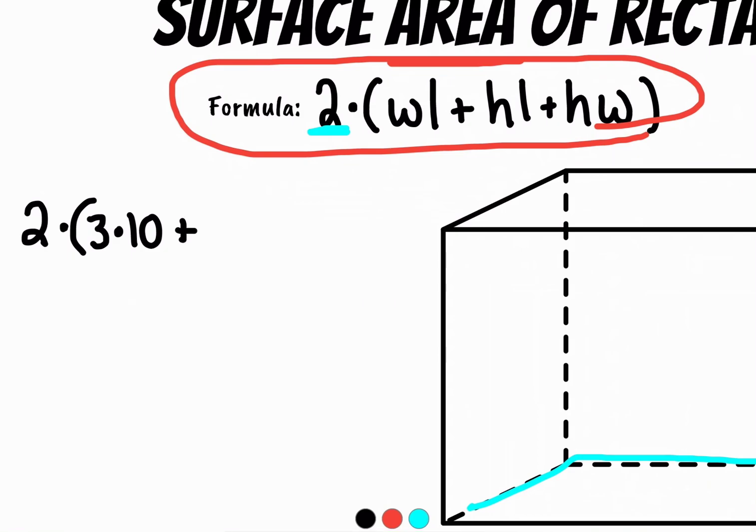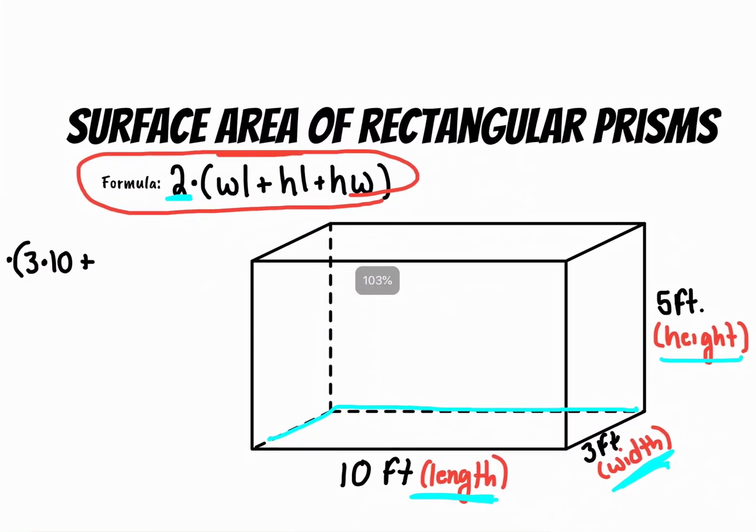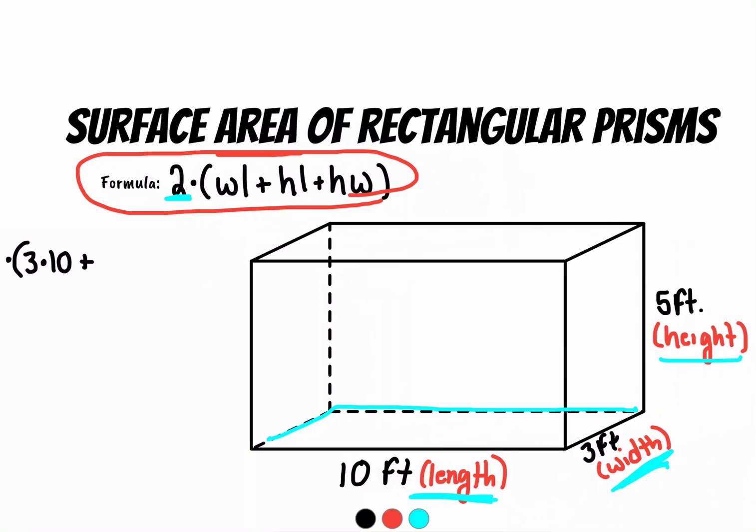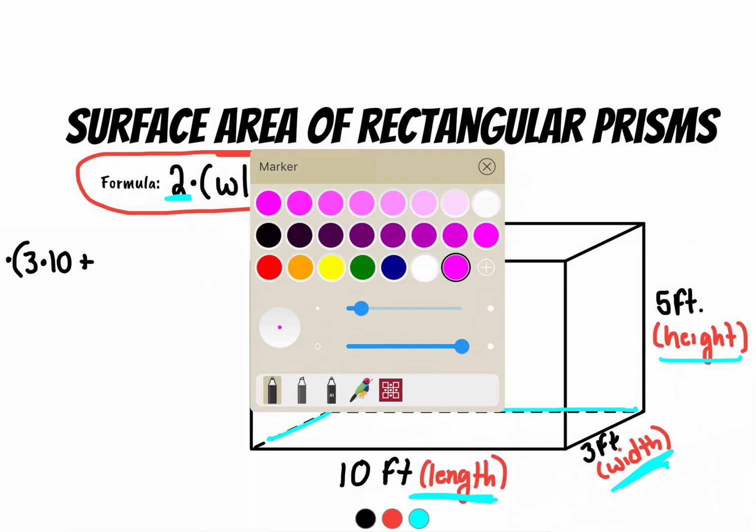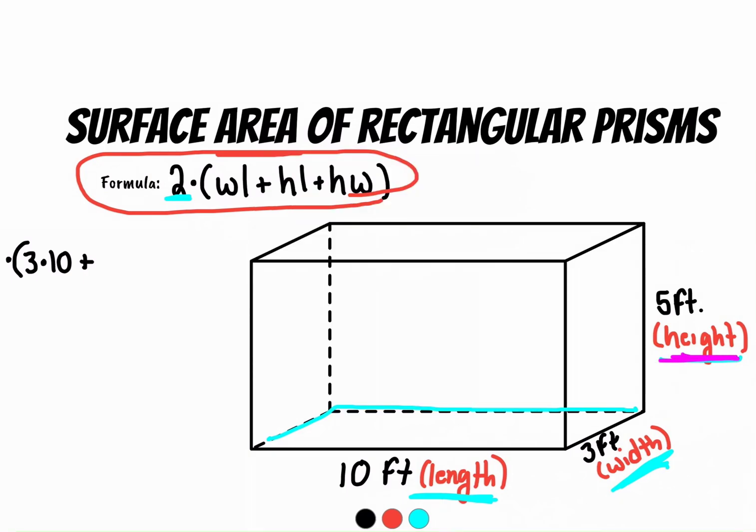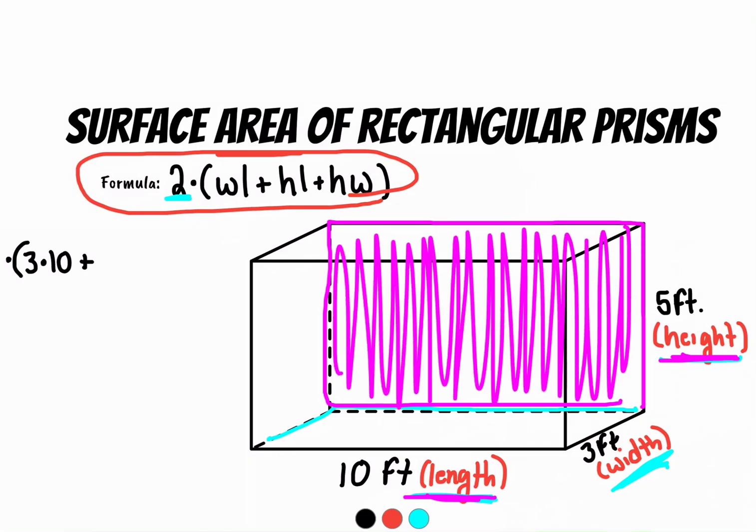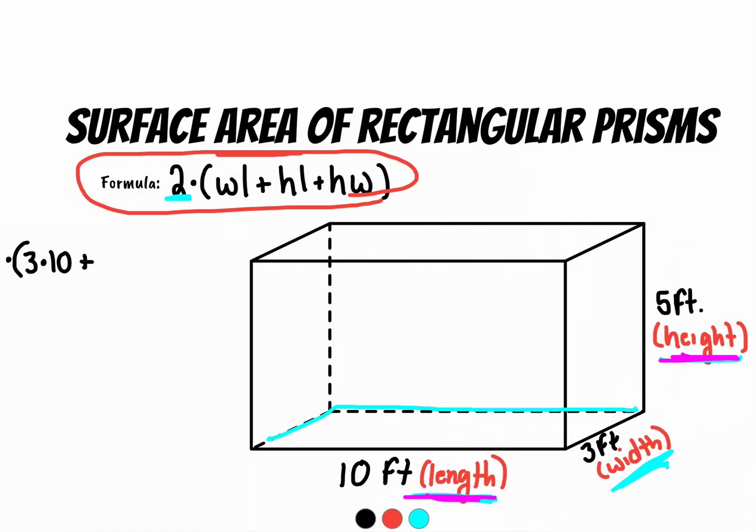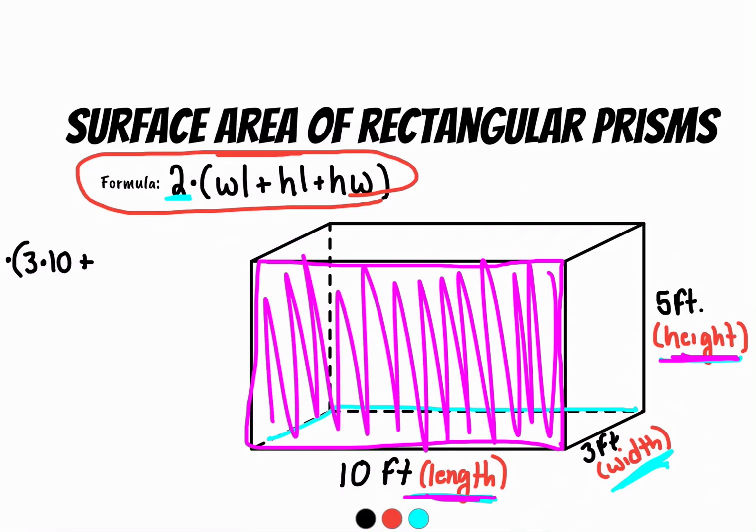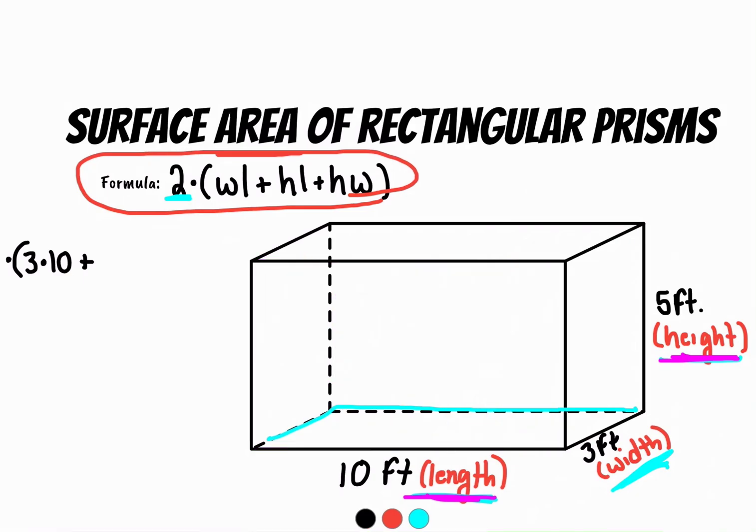We're going to add height times the length. Well, the height is, I'm doing a different color, the height is five. The length is 10. So you're really calculating this back square over here. So you're calculating the surface area of this. I'm going to have to take it all away so you can see the front. And you're calculating the surface area of this front square, all of this surface area over here.